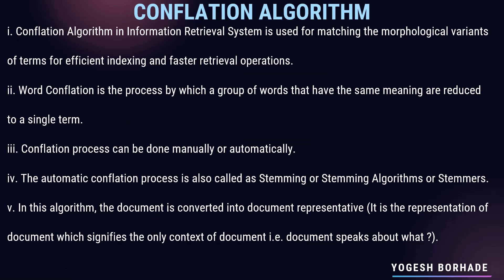The second topic is the conflation algorithm. The conflation algorithm in IRS is used for matching the morphological variants of terms for efficient indexing and faster retrieval operations. Morphological variants are words that have the same meaning but are expressed in different forms. For example, 'walk', 'walks', and 'walker' all have the same basic meaning — the action of walking.